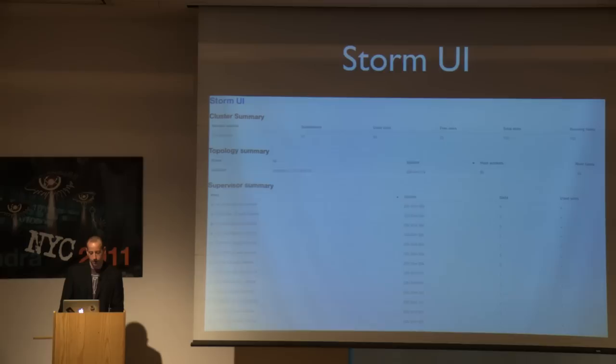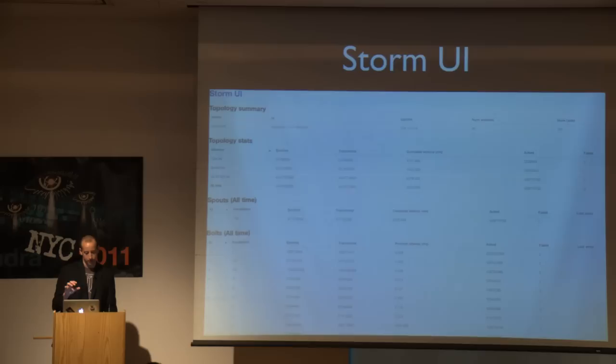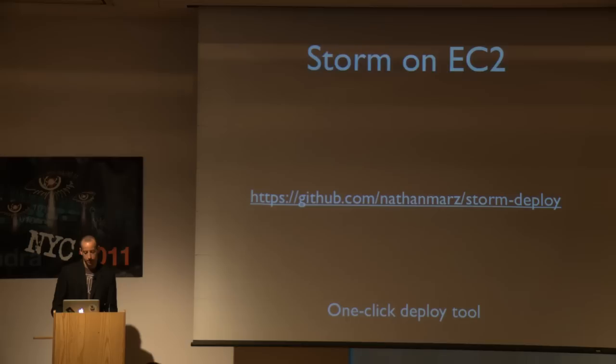Storm has a few more features. It has a built-in UI where you can see what's running on the cluster and really fine-grained stats about the processing — keeping stats on the latency and throughput of every spout and bolt. You can dig into it at the per-component, per-task, or per-stream level.